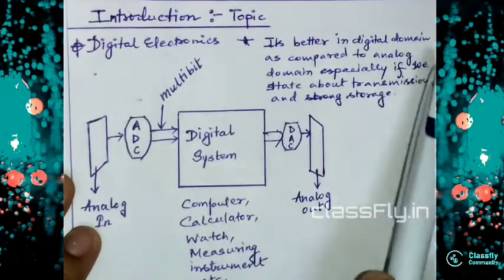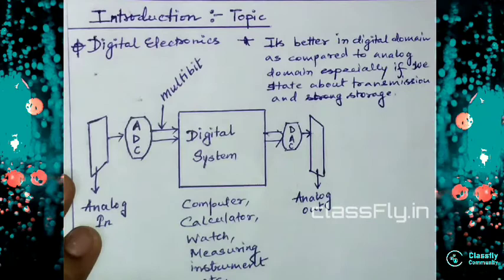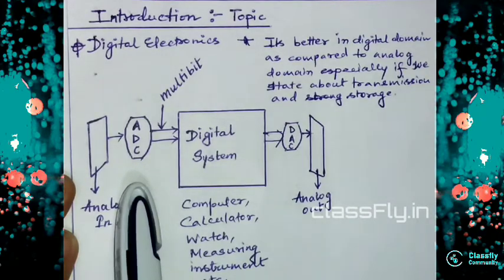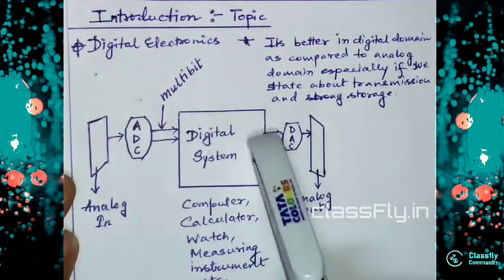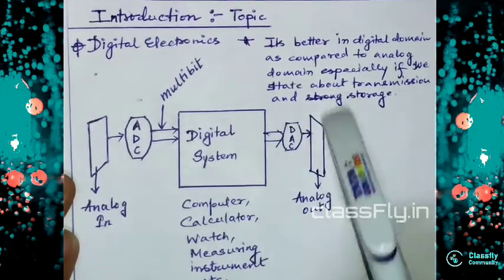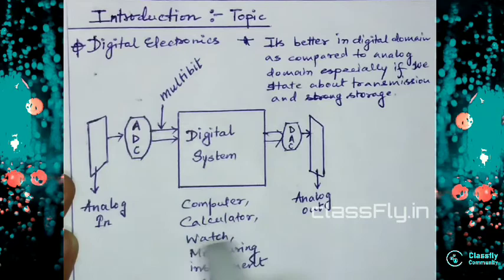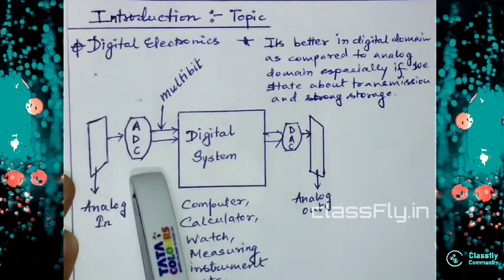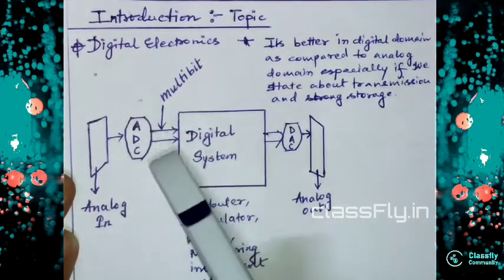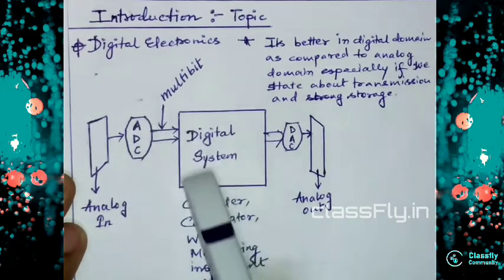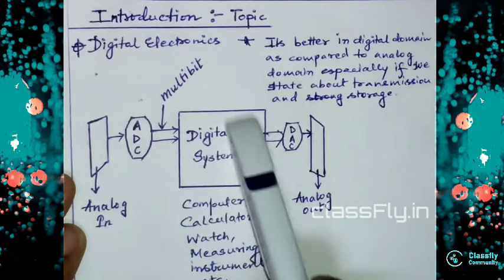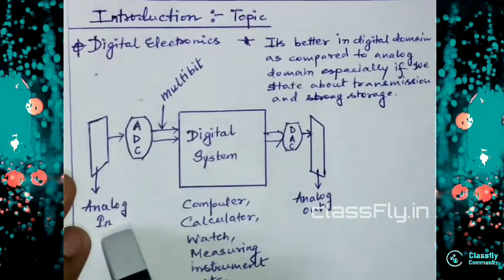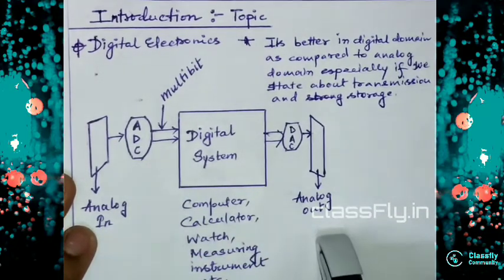Especially regarding transmission and storage: if this is an analog input, this is the ADC, this is the multi-bit digital system, and this is the DAC, and this is an analog output. Computers, calculators, watches, measuring instruments — these are all digital systems. Whatever the analog input is, it is processed through the ADC so the digital system can understand it.